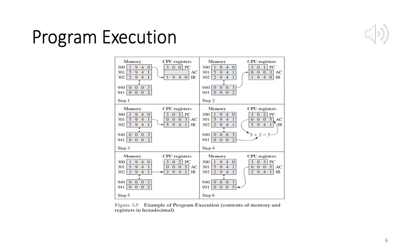Now on slide 6: program execution. We'll go through one sample computation. The goal is to add contents of memory word at address 940 to the contents of memory word at address 941 and store the result in the latter location. So memory location 940 contains 3, and 941 contains 2 — we want to compute 3+2=5 and store 5 in location 941.